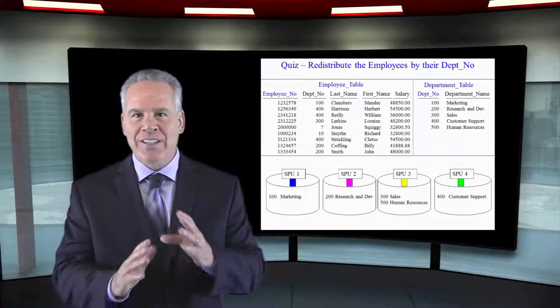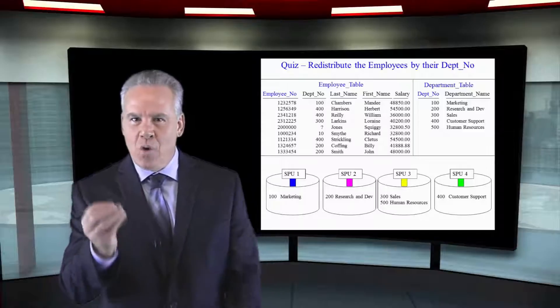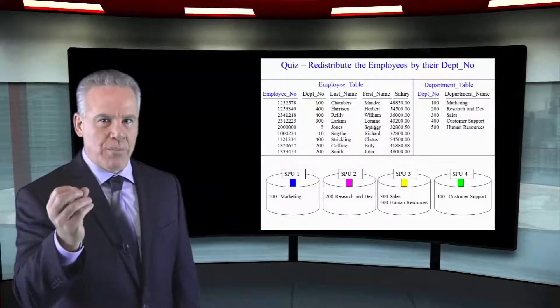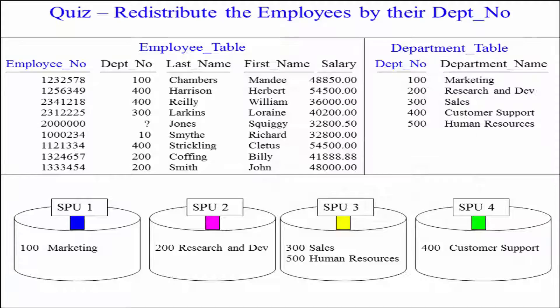You're gonna get to see this now in slow motion. We know that the department table had a distribution key of Depno and that's how the data laid out when they hashed Depno. Now we're about to redistribute the employee table, not by employee number, but for the life of this query Depno.